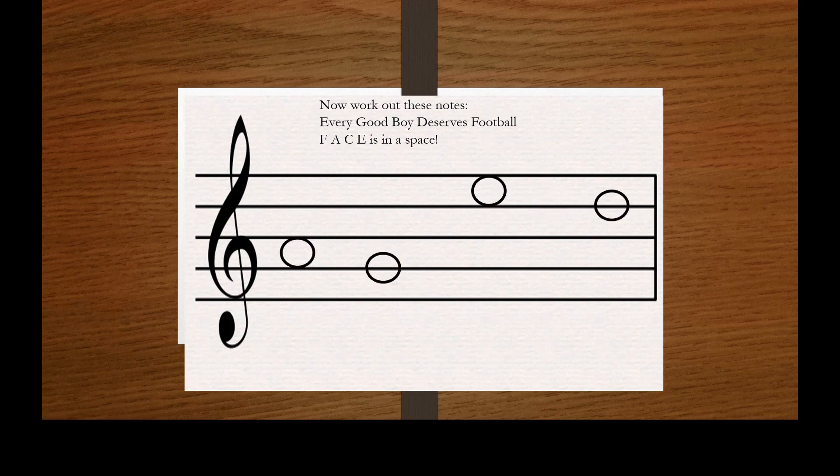Here's your next one. Here we go then. The first one is in a space, so I count the spaces: F, A. Then it's the lines: every good. Then back to the spaces: F, A, C, E. And back to the lines: every good boy deserves. So you've got the word aged. Here is your last one for today.